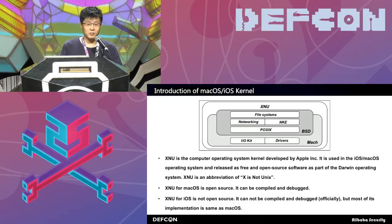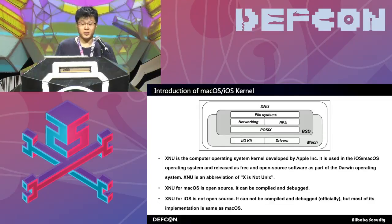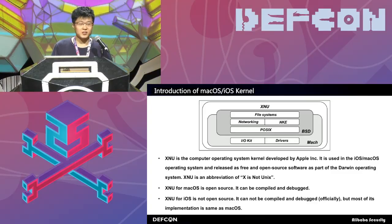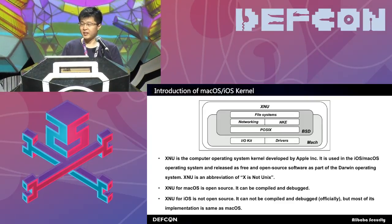The topic is kernel debugging. What is the kernel? The kernel is actually the XNU. XNU is the computer operating system kernel developed by Apple. It is open source software as part of the Darwin operating system. It has an abbreviation: X is Not Unix. We know that XNU for macOS is open source — it can be compiled and debugged.